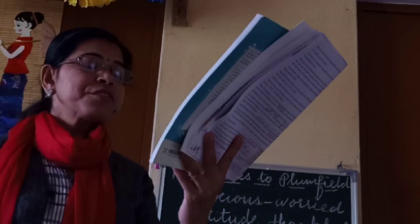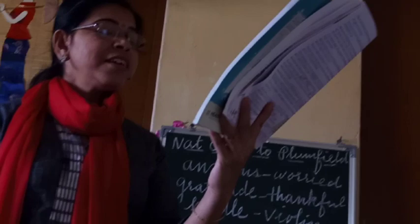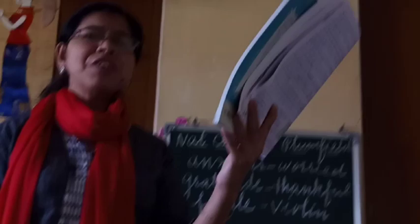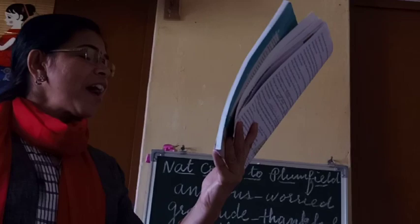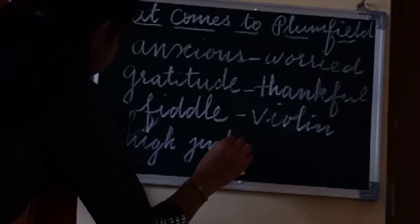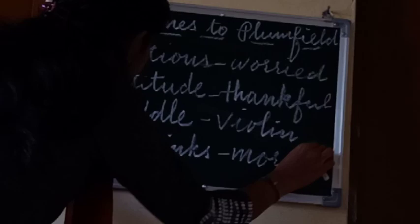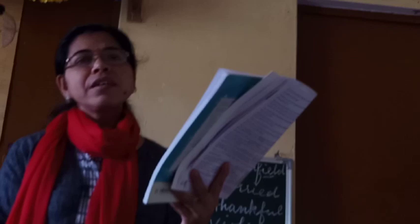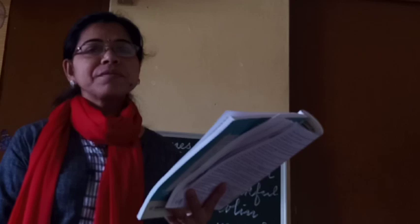After supper, when the lads flocked into the schoolroom for more high jinks - high jinks means noisy fun - all the boys ran to the schoolroom. At that time, Mrs. Jo appeared with a violin in her hand and went to Nat, who was sitting in a corner.